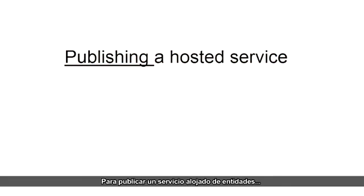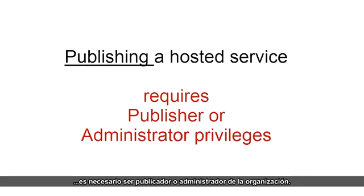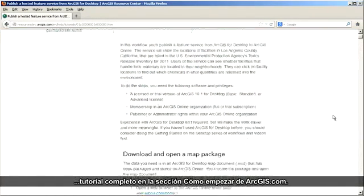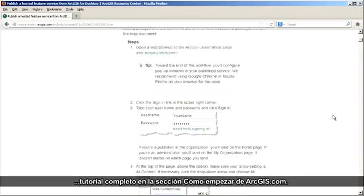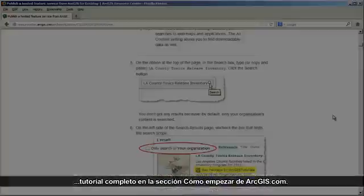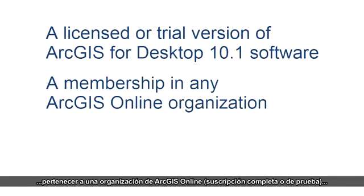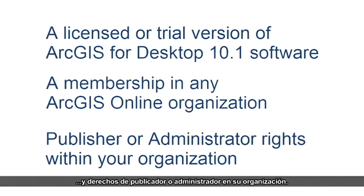To publish a hosted feature service, you have to be a publisher or administrator in your organization. If you want to follow along and actually do the steps yourself, you can find the complete tutorial in the Getting Started section of ArcGIS.com. You'll need a licensed copy or trial version of ArcGIS for Desktop 10.1 software, a membership in any ArcGIS Online organization, a full or trial subscription, and publisher or administrator rights within your organization.